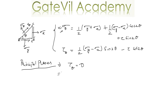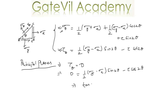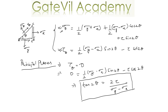To find out at what angle the principal plane exists, we substitute tau theta equal to zero into the equation. We have: 0 = half of (sigma y − sigma x) sin 2θ minus tau cos 2θ. From this we can find the value of tan 2θ, which will be equal to 2τ divided by (sigma y − sigma x).